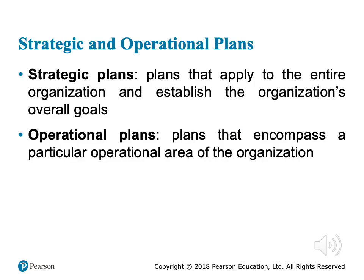Strategic plans are applied to the entire organization — just one plan for the whole organization that establishes the organization's overall goals. Operational plans are made specifically for a particular operational area. For example, we have a marketing plan, an accounting plan, an operations plan, an HR plan, and so on. Operational plans cover a particular area inside the organization, while the strategic plan covers the entire organization.